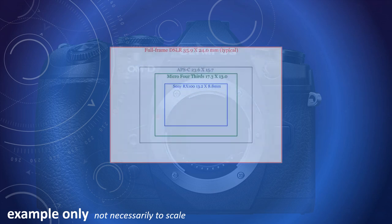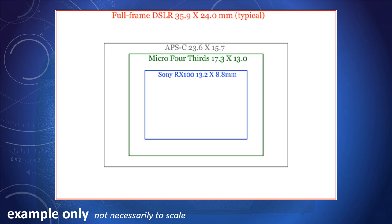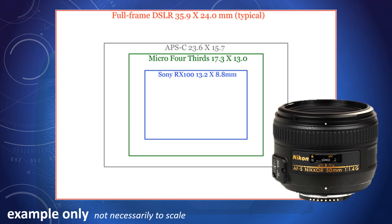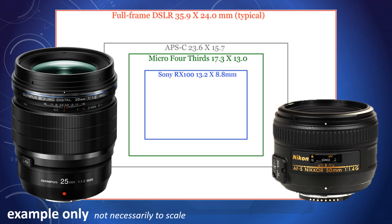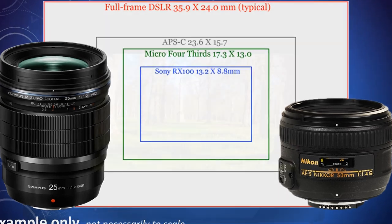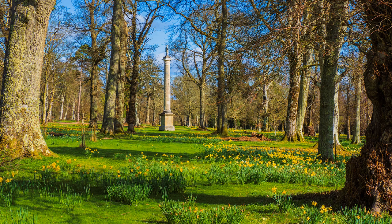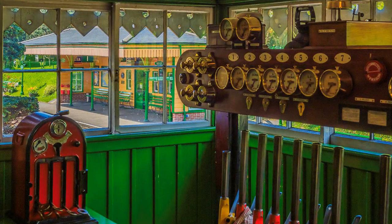Now we come to sensor size, for which there is no universal agreement. A full-frame camera has a sensor size similar to 35mm film; therefore its standard lens has a focal length of around 50mm. Micro Four Thirds camera sensors are roughly half the size of full-frame; therefore a standard lens for MFT has a focal length of 25mm, giving more depth of field. Micro Four Thirds images will have more depth of field than full-frame because the focal lengths of their lenses are shorter. These are not the only sensor sizes used in cameras, so other variations apply.